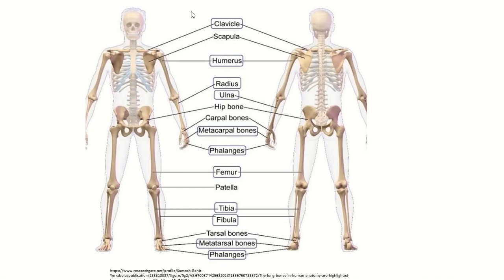Looking at the bones of the skeletal system: the collarbone is the clavicle, the triangular-shaped bone is the scapula, the arm bone is the humerus, then there are radius and ulna, the hip bone or pelvic girdle, carpal bones, metacarpal bones and phalanges of the hand, then femur, patella, tibia, and fibula — the femur being the longest bone.